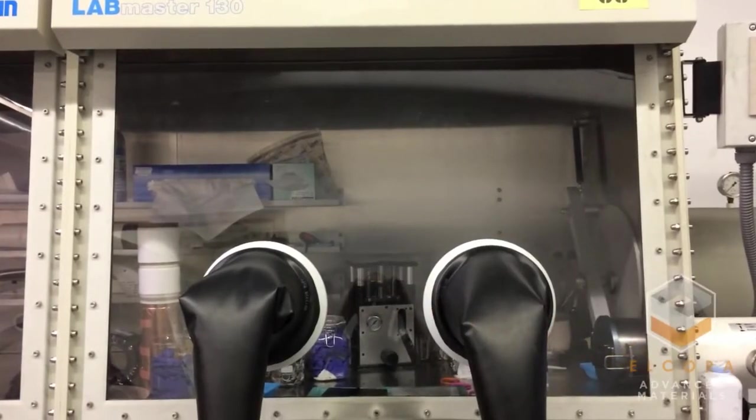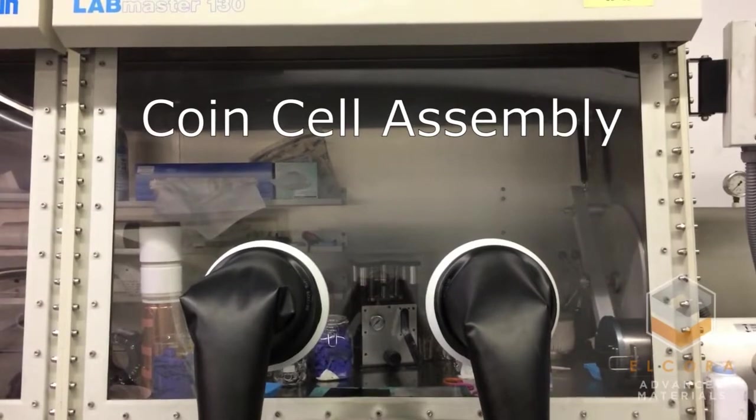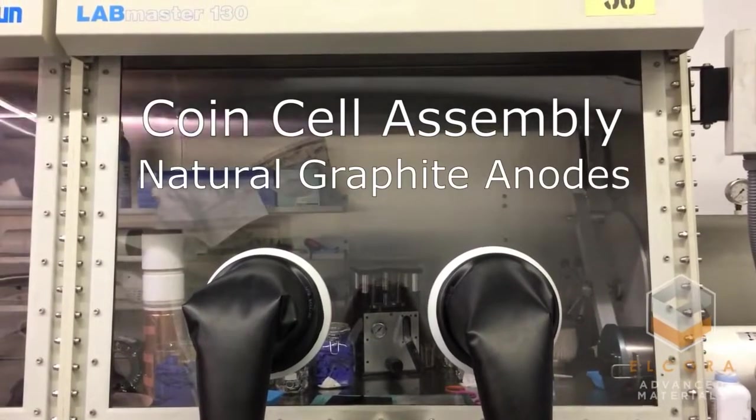Ben here with Alcora Advanced Materials. In this video I'm going to show you how we assemble lithium-ion coin cells that we use to test our natural graphite anodes.